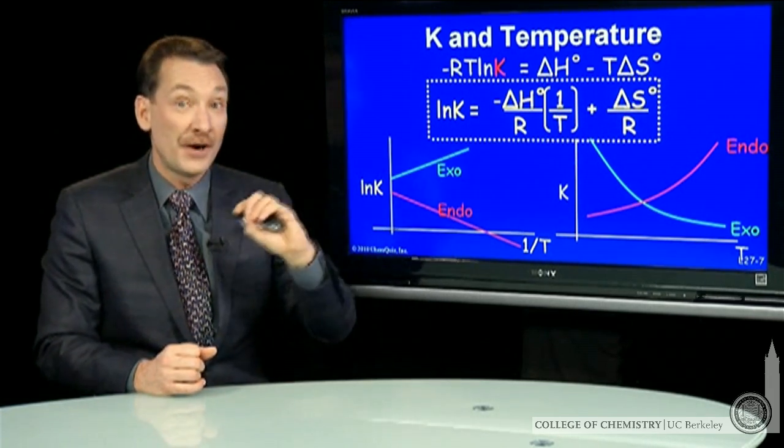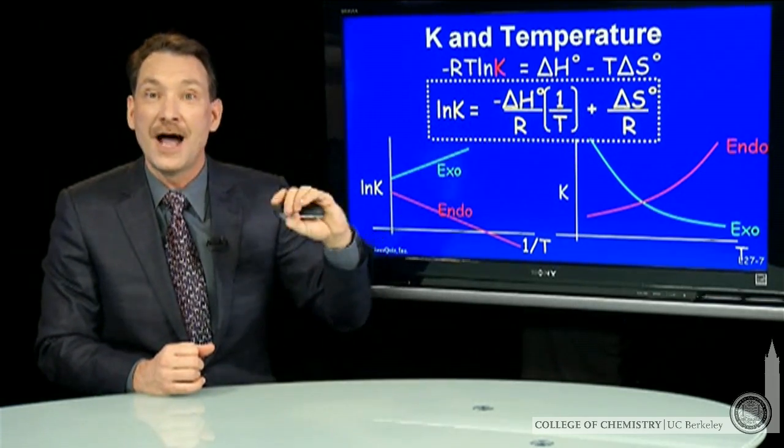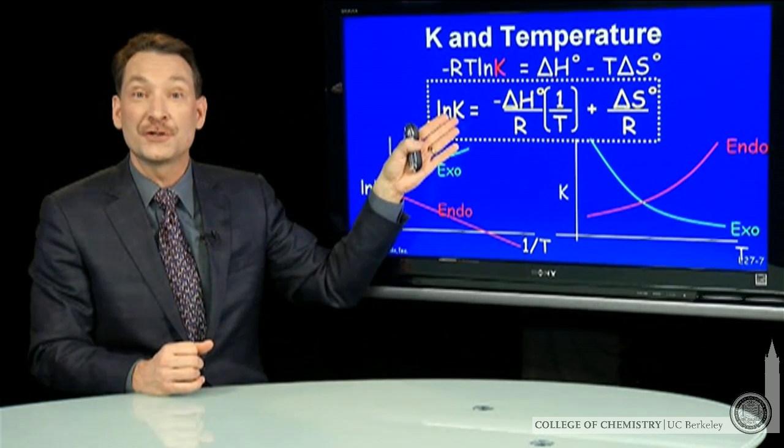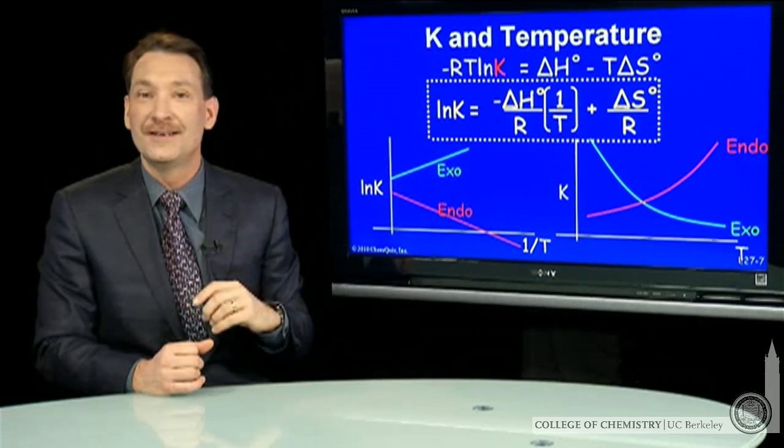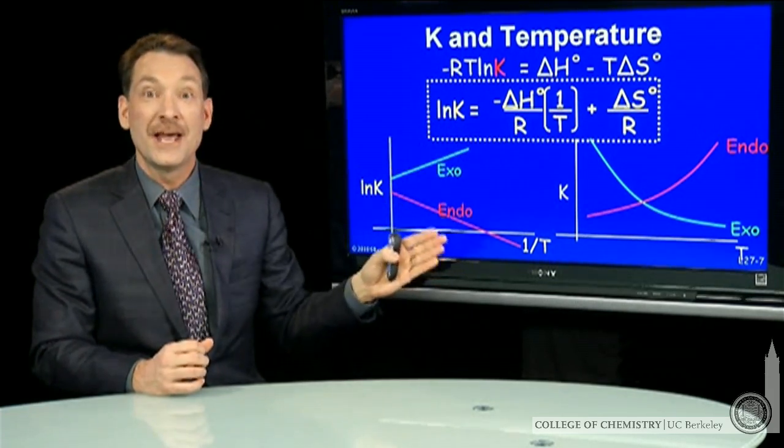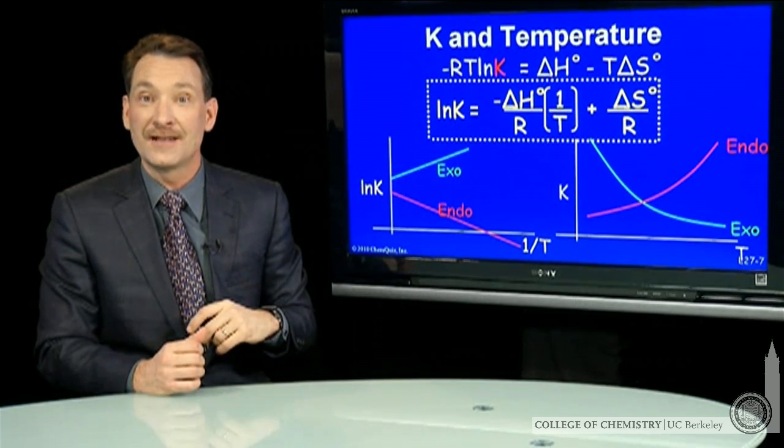So two parameters that are otherwise difficult to measure—the enthalpy and the entropy—I can get from easy to measure parameters: the concentrations or partial pressures versus temperature. Measure K versus T, plot it out, and you can measure entropies, which are very difficult to measure in the laboratory.